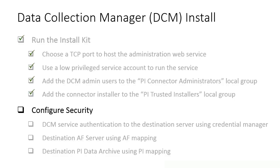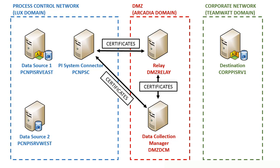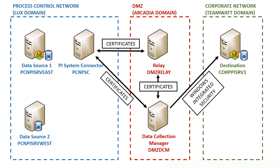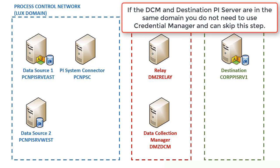Now let's configure security. In our setup, we are using three untrusted domains. The communication between the DCM and the connector and the relay is through certificates, which are being exchanged as part of the registration process. On the other side, Windows Integrated Security is used between the DCM and the destination server. Since we are using untrusted domains, we need to take some extra steps to give the DCM service account access to the destination PI server. Depending on your network setup, you may skip this step.